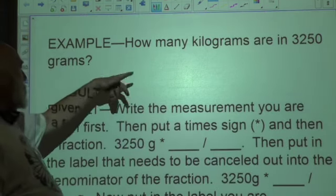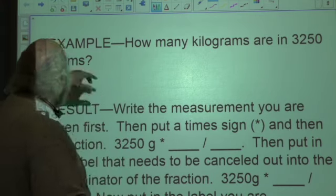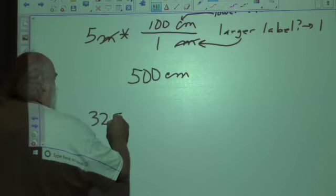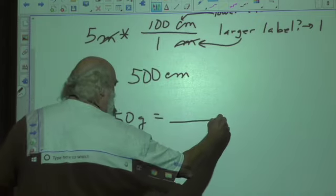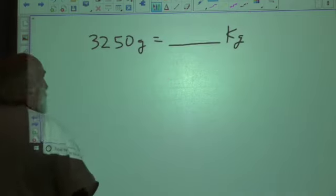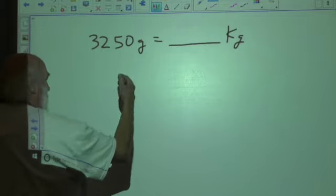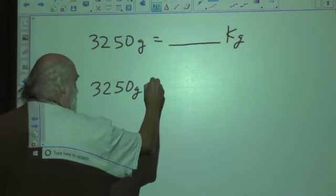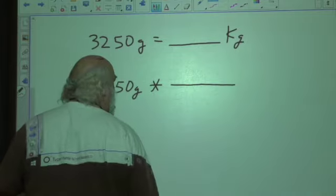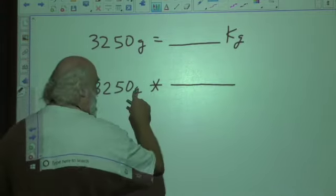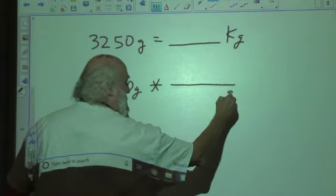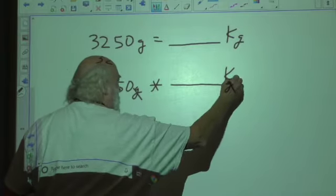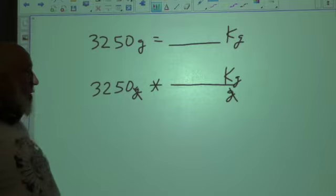Let's take a look at this example: How many kilograms are in 3,250 grams? So we have 3,250 grams equals blank kilograms. Again, we write this down, 3,250 grams. And then instead of an equal sign, we put a times sign, and then we put a fraction line. And we're going to change the gram to kilogram. So the gram is in the numerator here. You're going to put the gram in the denominator there, and they will now cancel out. That means we're going to put the kilogram up here.